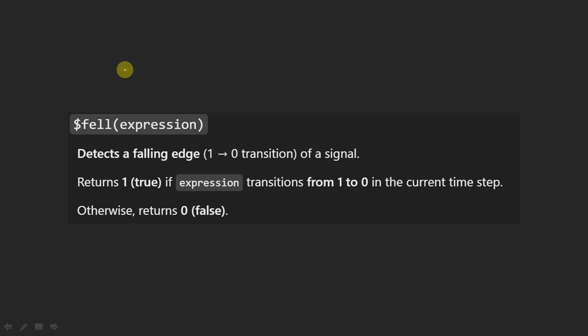Welcome back to my YouTube channel. In this video we are going to discuss the system function known as `$fell`. This function will detect a falling edge, that is a one-to-zero transition of a signal. This function will return one (true) if the expression transitions from one to zero in the current time step, otherwise it will return zero. Let us understand this with an example.